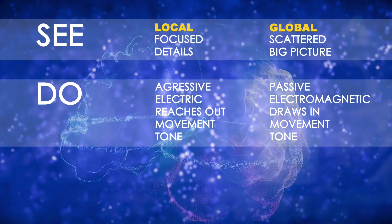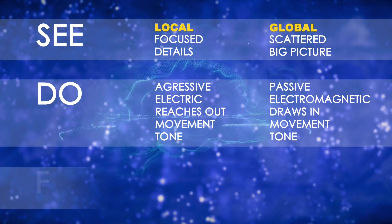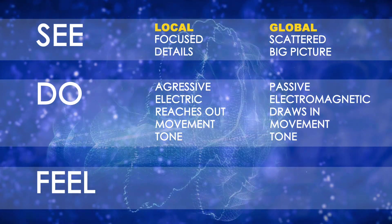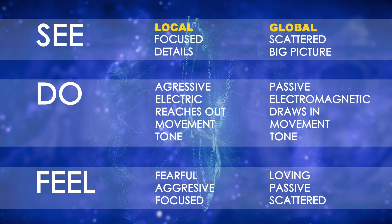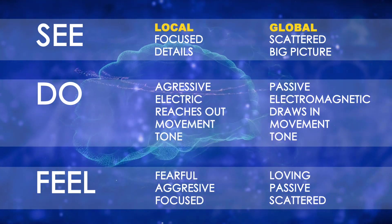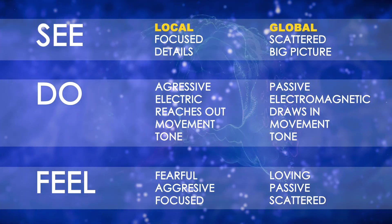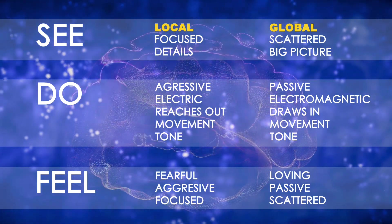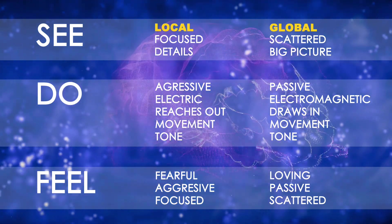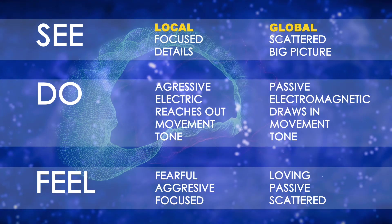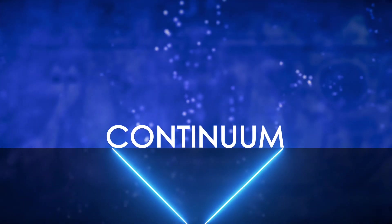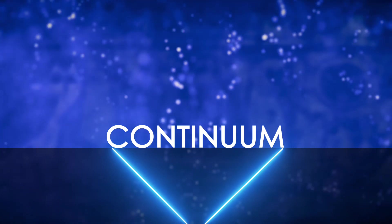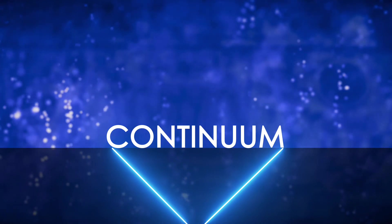Finally, the brain's division into complementary hemispheres affects the way we feel, since our local side is energized by fear and our global side is energized by love. And of course, what each side of the brain sees and does also affects how we feel. The local side of the brain feels fearful, aggressive, and focused. The global side feels loving, passive, and scattered. Bear in mind that a system of two complementary parts produces a continuum. A continuum unleashes a wide range of viewpoints and genders, not just the two most obvious ones.